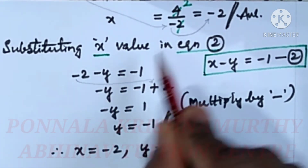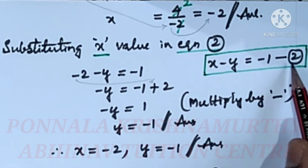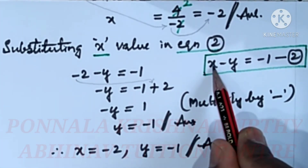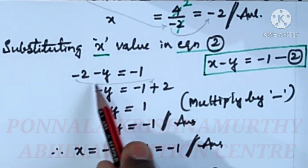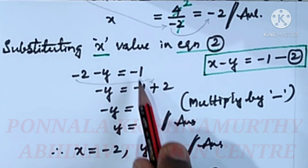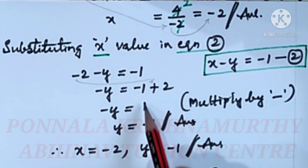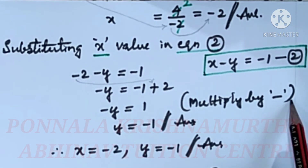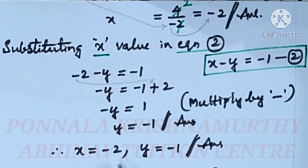Now substituting this x value in equation 2. Equation 2 is x minus y equal to minus 1. In place of x, substitute minus 2: minus 2 minus y equal to minus 1. Minus y equal to minus 1 plus 2, which is 1. Minus y equal to 1. Multiply both sides by minus: y equal to minus 1. Answer: x equal to minus 2 and y equal to minus 1.